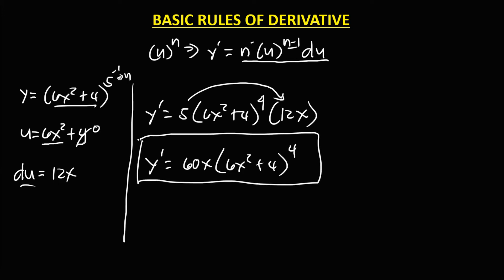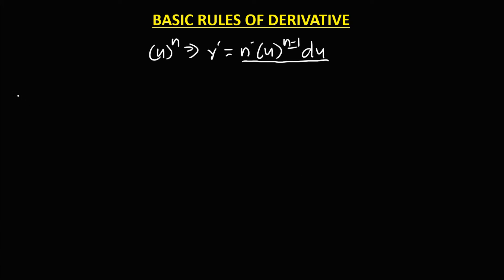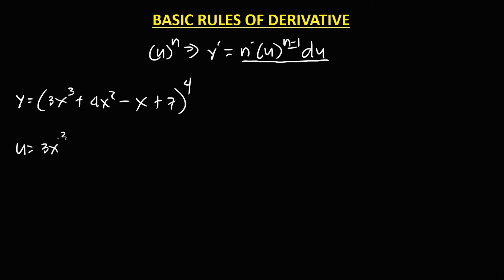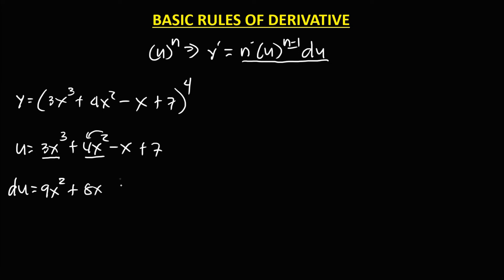For y equals 3x to the power 3 plus 4x squared minus x plus 7, all raised to the power 4, using the general power rule: u equals 3x to the power 3 plus 4x squared minus x plus 7. The derivative of u: derivative of 3x cubed is 9x squared, plus the derivative of 4x squared.